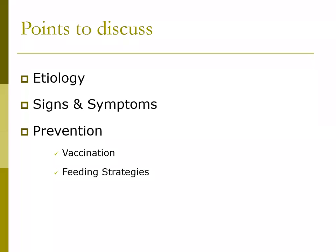The signs of enterotoxemia in sheep and goats include animals abruptly going off their feet and becoming lethargic and anorexic. Affected animals may show signs of stomach pain such as kicking at their belly, repeatedly laying down and getting up, laying on their side, panting, and crying out. Diarrhea may also develop.